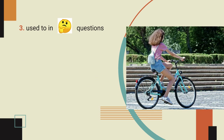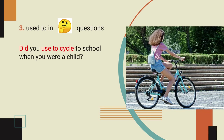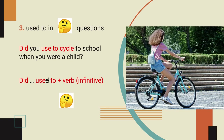In questions, it's nearly the same: 'Did you use to cycle to school when you were a child?' The structure is: Did, then the subject — did I, did you, did he, did we, did the queen — then use to, no D, plus verb infinitive. That's the question form.